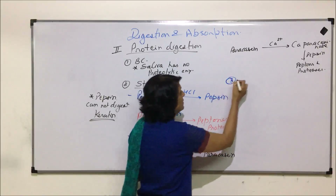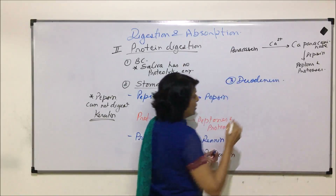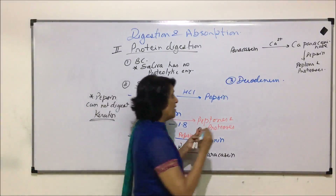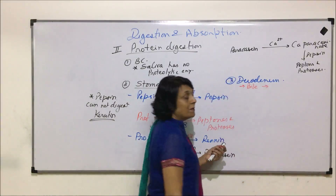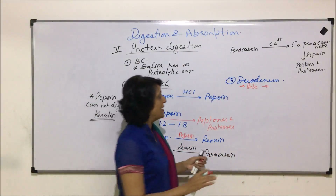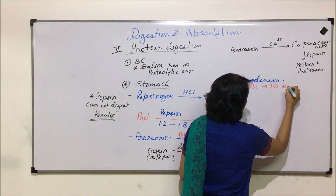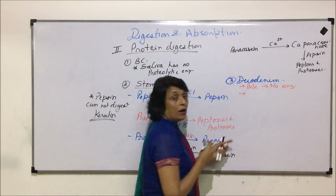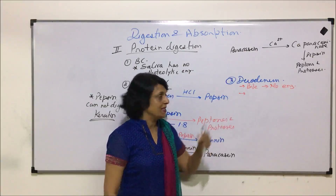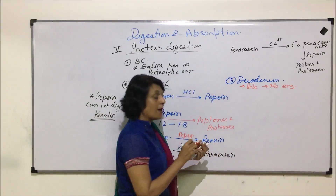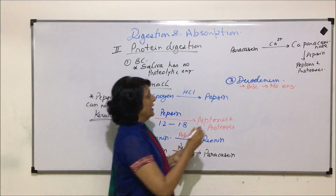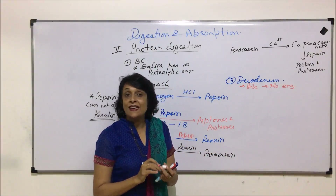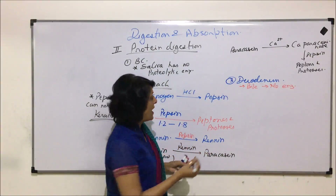After the stomach, the food comes to the third location — the duodenum, which is part of the small intestine. Here, three different juices are poured in. One is bile, which has no digestive enzyme and therefore does not help in digestion. The other two are pancreatic juice and intestinal juice, which contain important proteolytic enzymes.